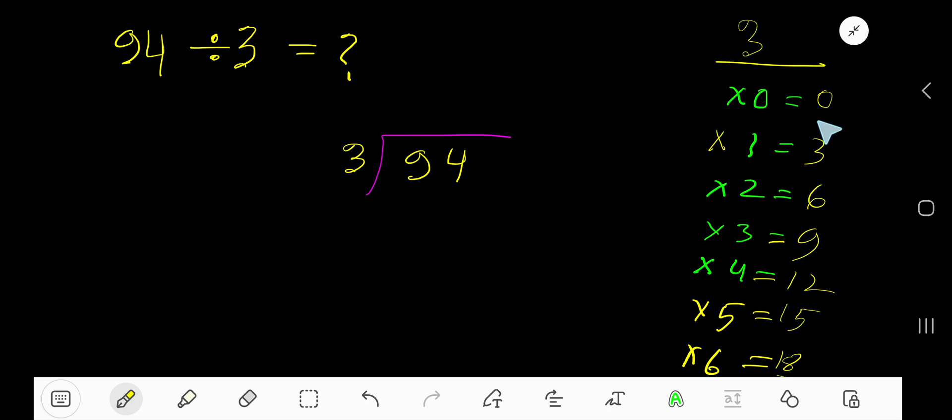To find out the multiplication table of 3, just add 3 with the previous step: 0 plus 3 is 3, 3 plus 3 is 6, 6 plus 3 is 9, 9 plus 3 is 12, 12 plus 3 is 15. 3 goes into 9 how many times?